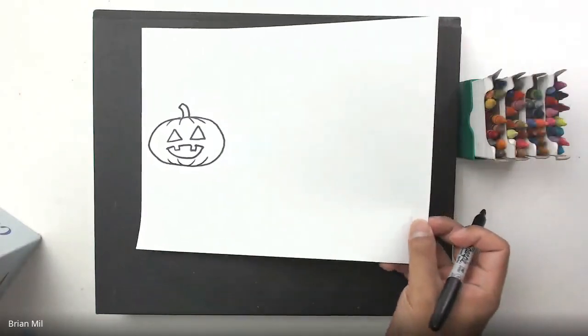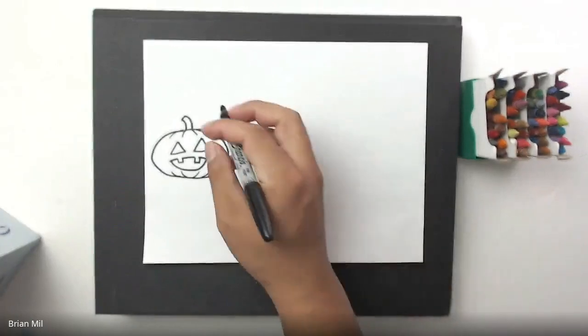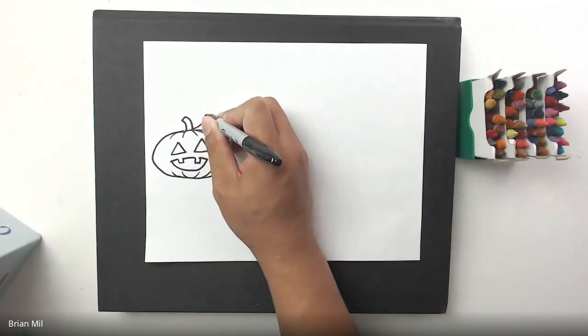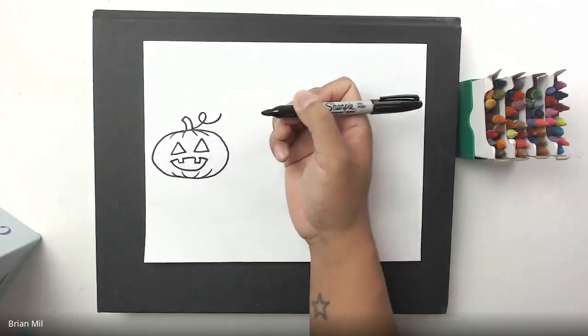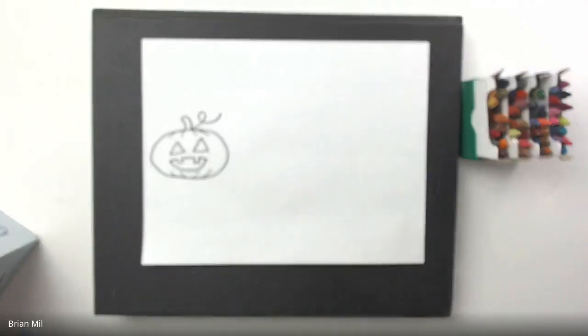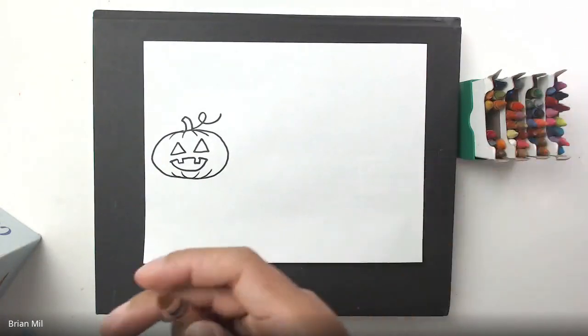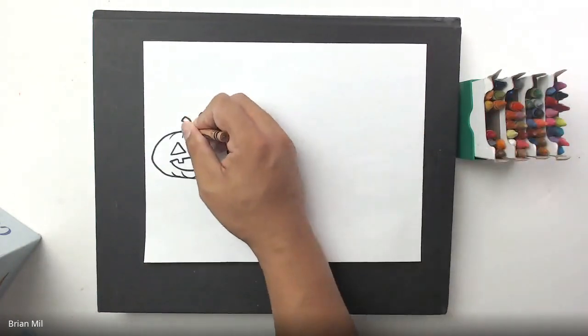Good job. There is an optional thing if you'd like to do. Sometimes people like to add a vine. In order to do a vine, I'm just going to do a loop-de-loop. Like that. And sometimes people like to add a leaf to that. If you want to add a leaf to your pumpkin, you can. And if you're faster than me and you're way ahead, you can just start coloring it if you want.